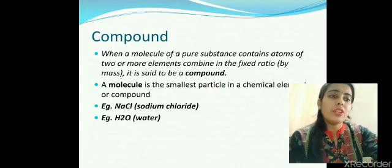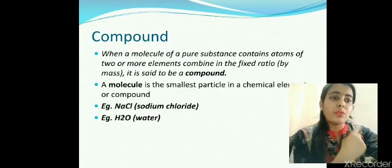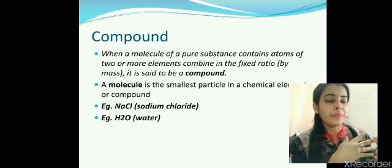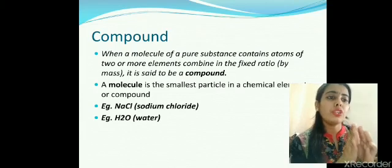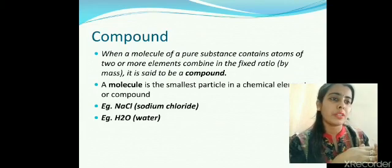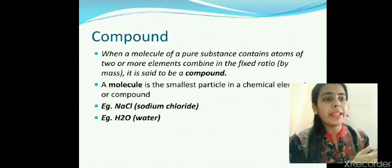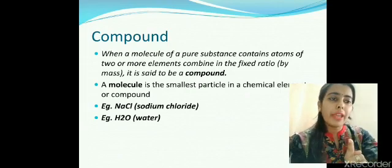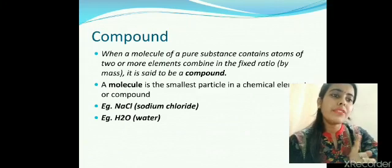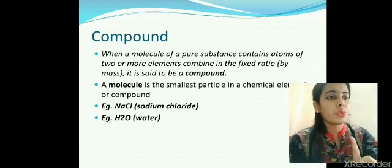Scientists have classified substances into two major categories. One was element, another is compound. Element contains only one kind of atoms but compounds contain two or more kinds of atoms. Like the example of common salt, that is sodium chloride represented chemically as NaCl. This one molecule contains one atom of Na, that is sodium, and one atom of Cl, chlorine. Sodium and chlorine are bonded together to form one molecule of sodium chloride.